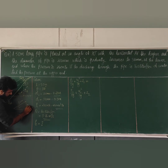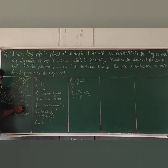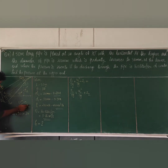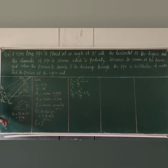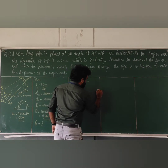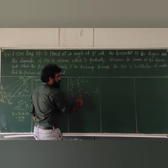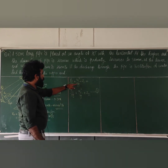Z2 is equal to 50 sin 30. Since sin theta equals opposite side over hypotenuse, the opposite side is Z2 and hypotenuse is 50. So Z2 equals 50 times sin 30, which gives Z2 equal to 25 meters. We need to calculate V1 and V2 using the continuity equation: P1 over rho·g plus V1 squared over 2g plus Z1 equals P2 over rho·g plus V2 squared over 2g plus Z2.